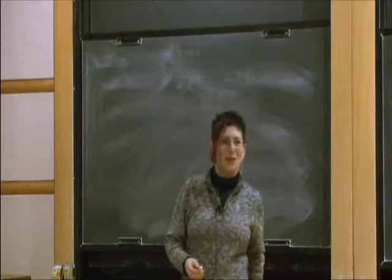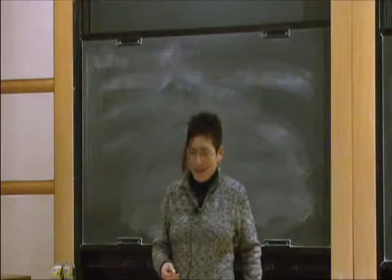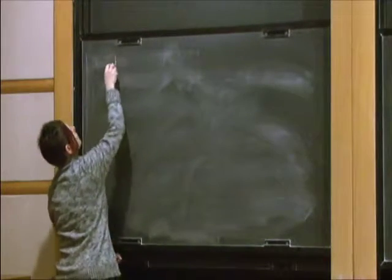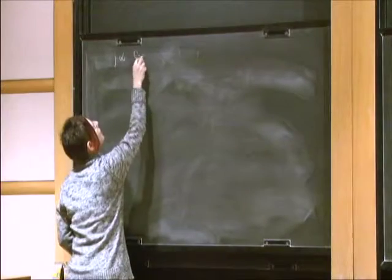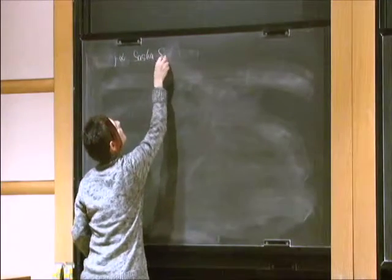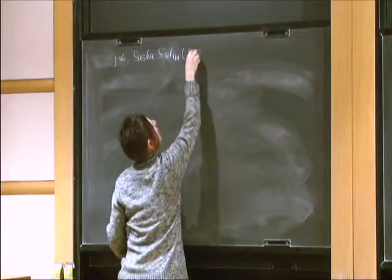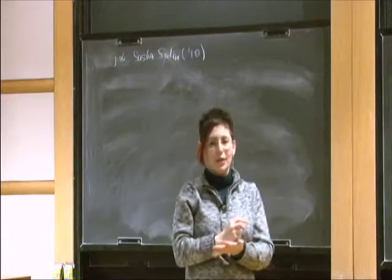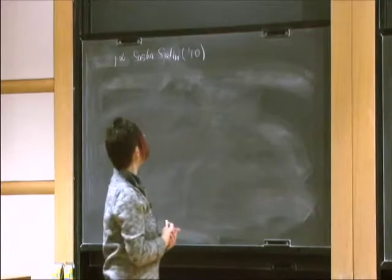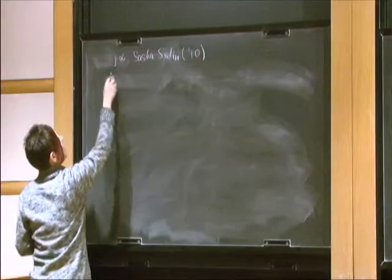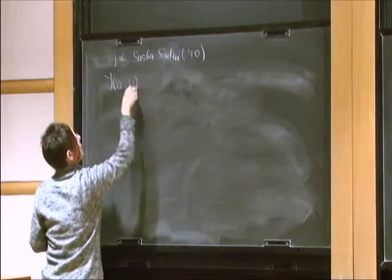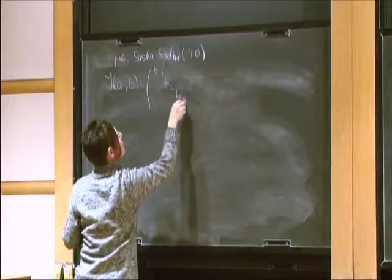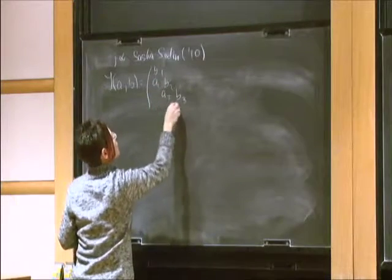This is joint work with Sasha Sodin from 2010. In this work we study semi-infinite Jacobi matrices — these are tridiagonal matrices which I will denote by J_{AB}, which have B's on the main diagonal and A's on the two other diagonals.